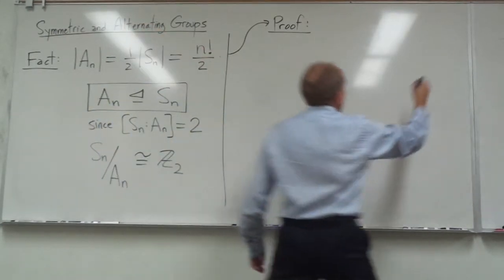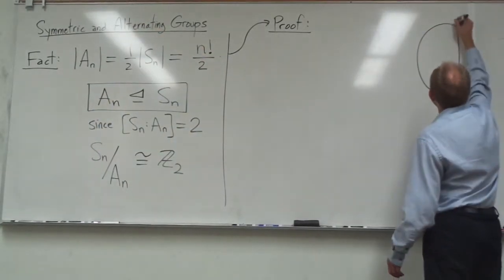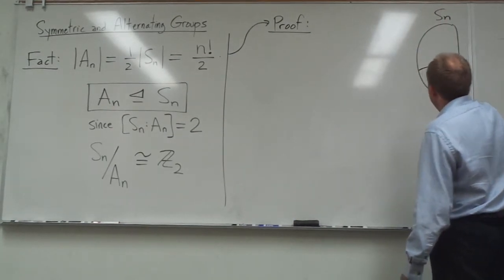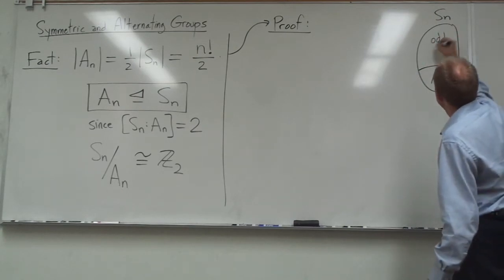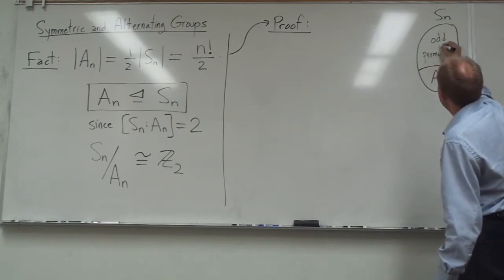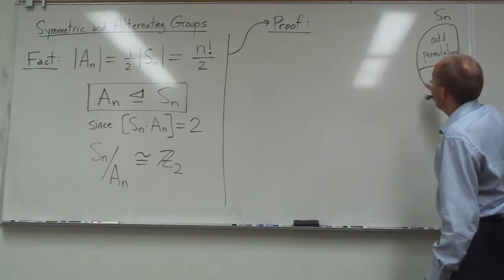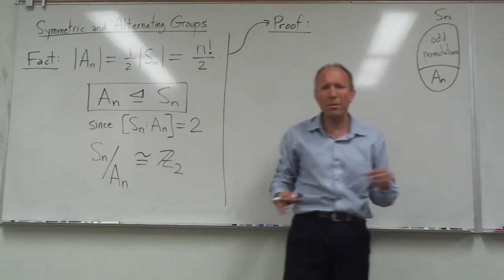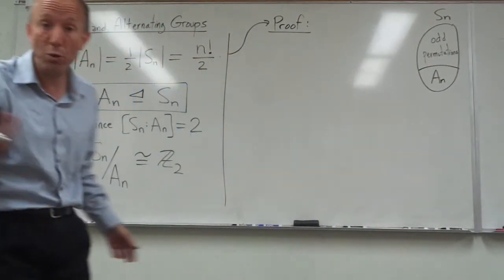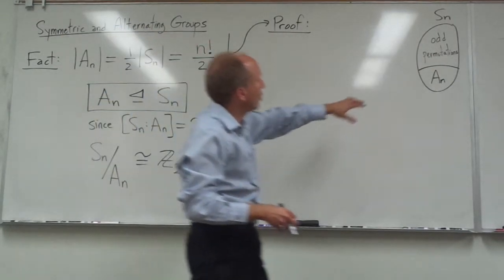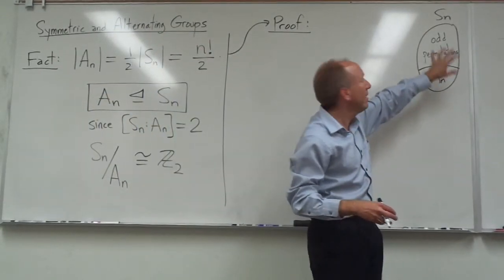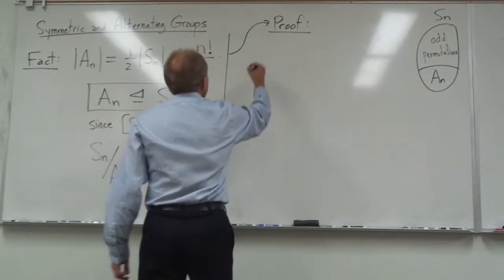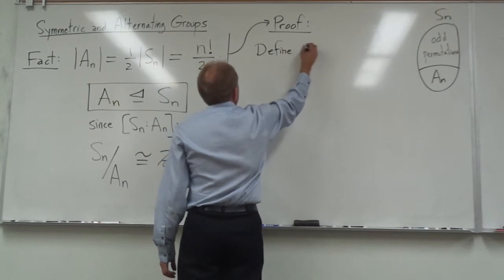Once you know that An is a normal subgroup of Sn, well, you can actually prove this isomorphism using the first isomorphism theorem. And then from there deduce that An is half as big as Sn. Let's not do that. I'm not going to go there. Let's just leave what's on the board kind of at face value. And let me just explain this fact in a more elementary way that doesn't involve any group theory at all.